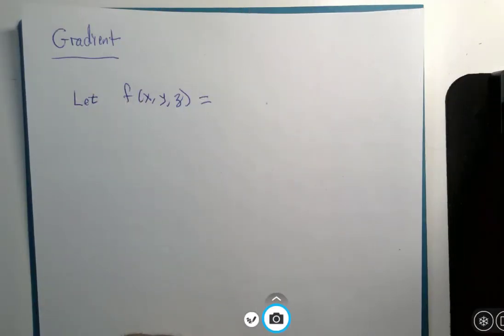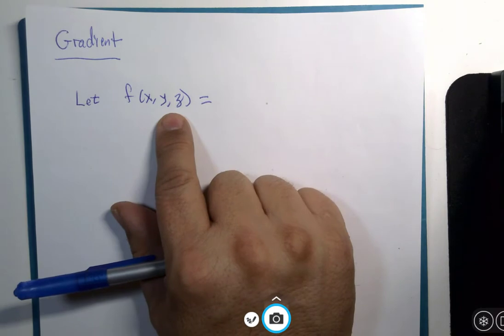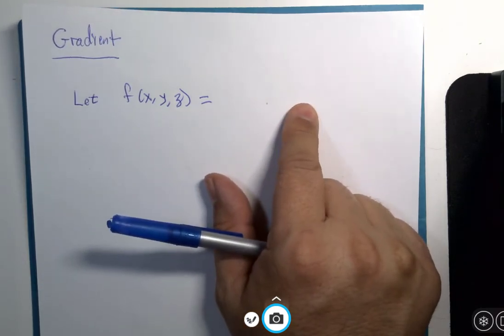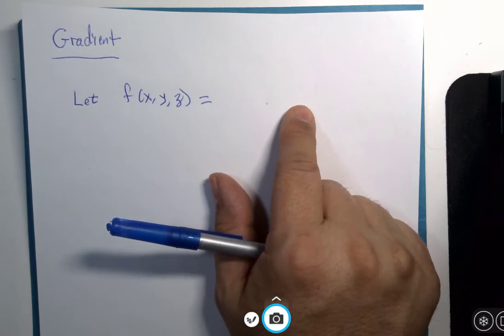So, we're going to calculate and use the gradient in a function with three variables. And it's going to be a simple looking function because I'm kind of using this as an introduction to my next topic as well. It's a transition.